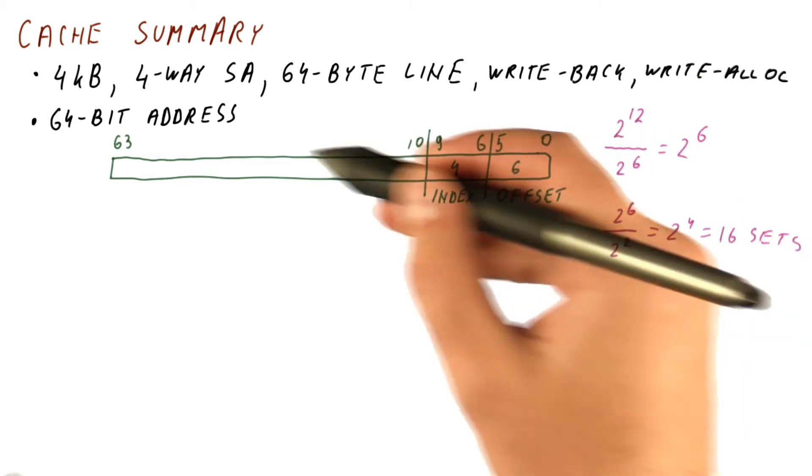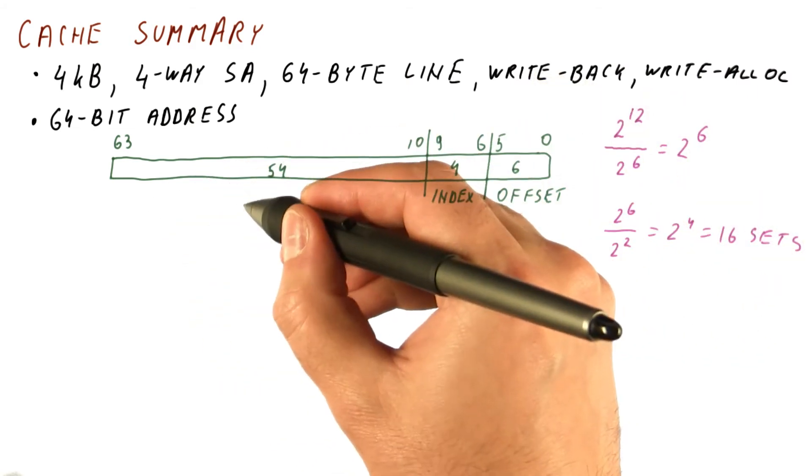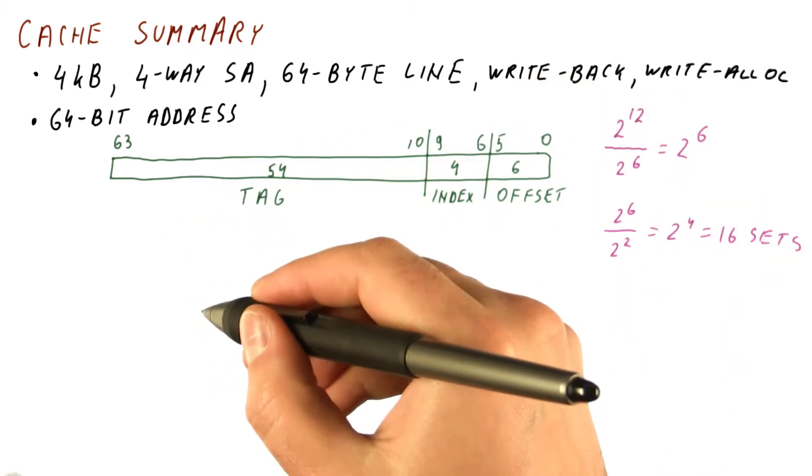The bits that remain, bits 10 through 63, 54 of them are the tag.